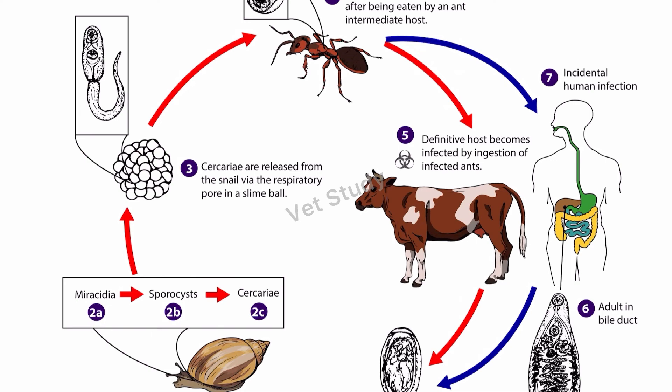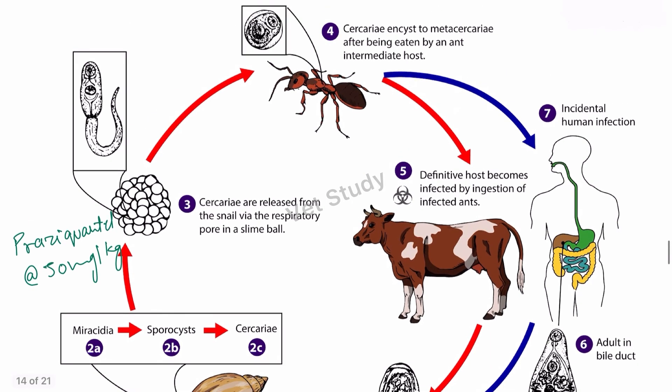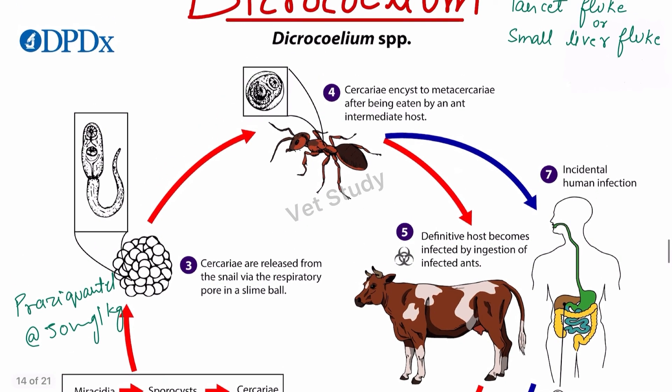Regarding epidemiology in India, this parasite is mainly confined to the Himalayan belt, because of the intermediate host. For diagnosis, it is similar to other parasites — clinical signs, necropsy findings, parasitological diagnosis, and serodiagnosis tests. For treatment, Praziquantel is the drug used at a rate of 50 mg per kg body weight. Control is similar to Fasciola. Thank you for watching — please press thumbs up and subscribe to Webstudy.